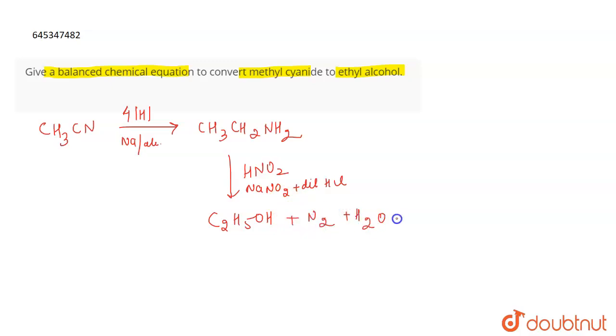This is how you carry out the given conversion. First, reduce CH3CN to CH3CH2NH2. Then after reducing it, you have to treat it with HNO2, NaNO2, and dilute HCl. This is going to give you alcohol which is ethyl alcohol, N2, and water. That's all for the question.